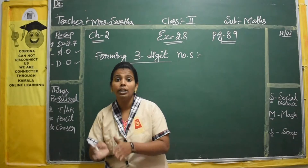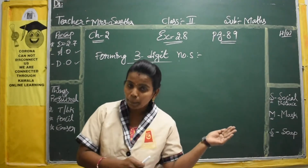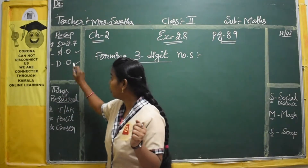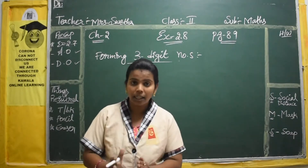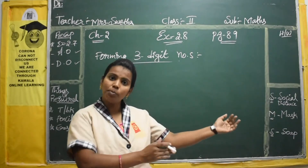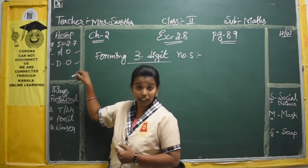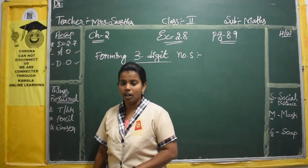Ascending order means what? Smallest number to the biggest number. And descending order means what? Biggest number to the smallest number. These two orders we have already learned in our previous exercise.